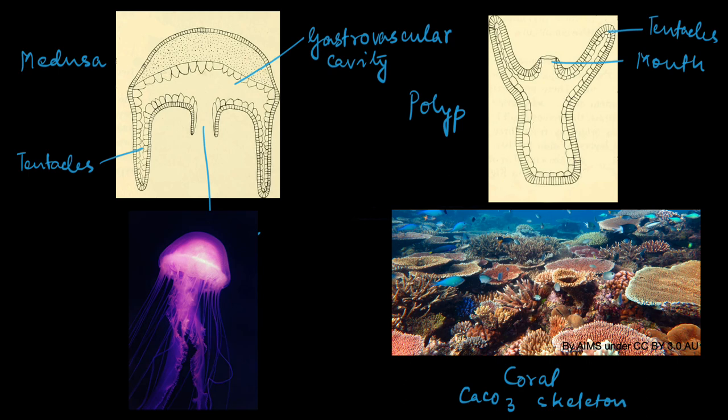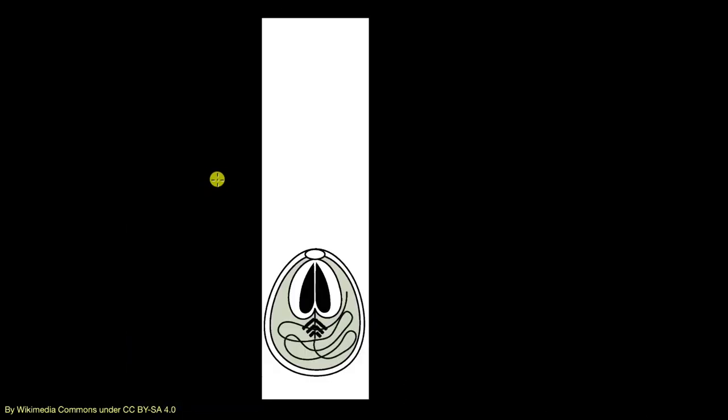The most interesting feature of cnidarians are the cnidoblasts—this is what they're named after. This whole thing is a cell called a cnidoblast. A cnidoblast is a cell which has the sting inside, and the sting itself—the structure inside—is called the nematocyst.